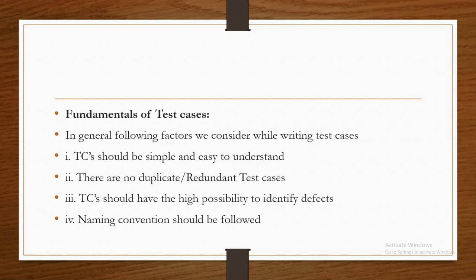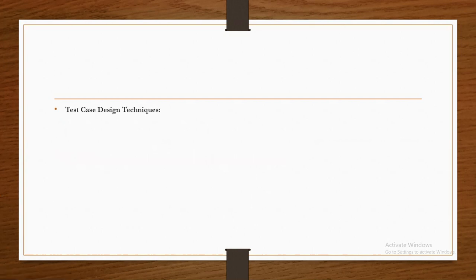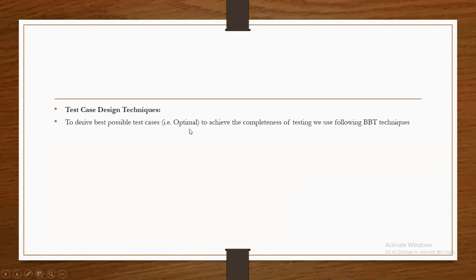You have the basic things you have to consider. You need to understand the functionality flow — that is important — before going for test case preparation. But which test case? Unless the test case is the best test case, we have to derive it. How we can derive the best test cases? For that, we have to go for the test case design techniques. To derive the best possible, optimal test cases to achieve completeness of testing, we use the following black box testing techniques, also called BBT or closed box testing.